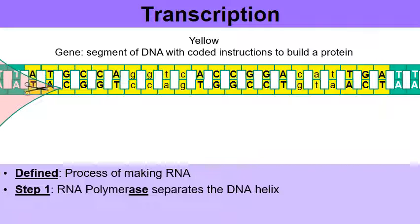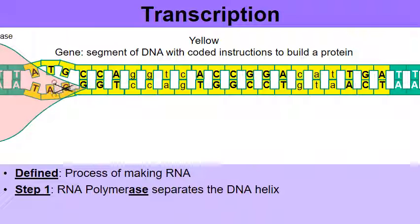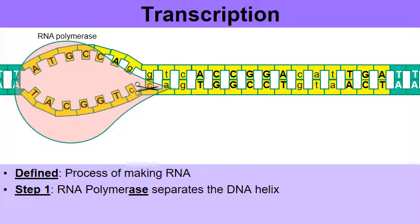As RNA polymerase continues down the double helix, it gets unzipped even further. Now that we've unzipped the DNA a little bit, we can move on to step number two. Free-floating RNA nucleotides are going to match with the DNA.